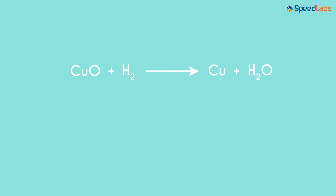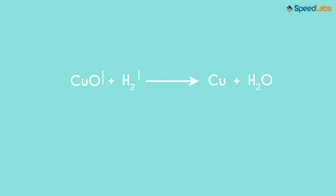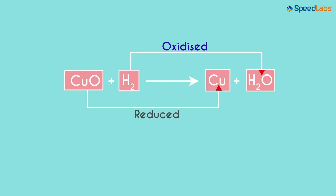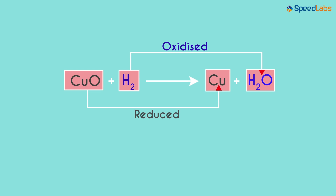Now look at this reaction closely. Hydrogen is gaining oxygen and cupric oxide is losing oxygen. If a substance gains oxygen during a reaction, it is said to be oxidized. And if a substance loses oxygen in a reaction, it is said to be reduced. So in this reaction, one reactant is gaining oxygen while the other is getting reduced.